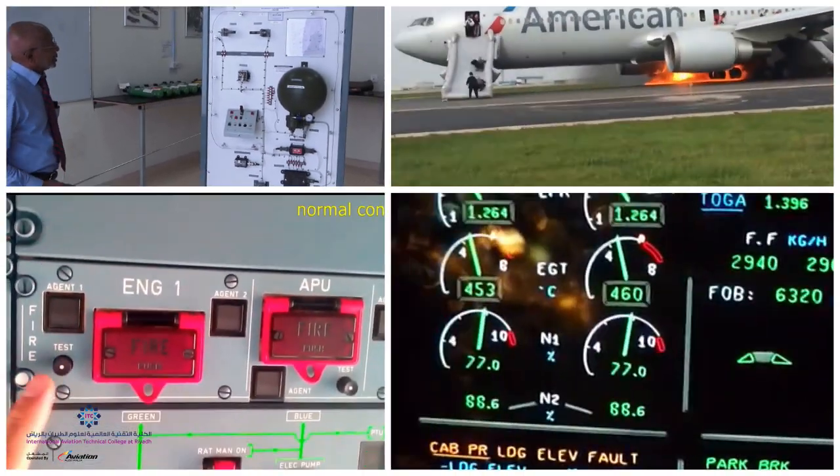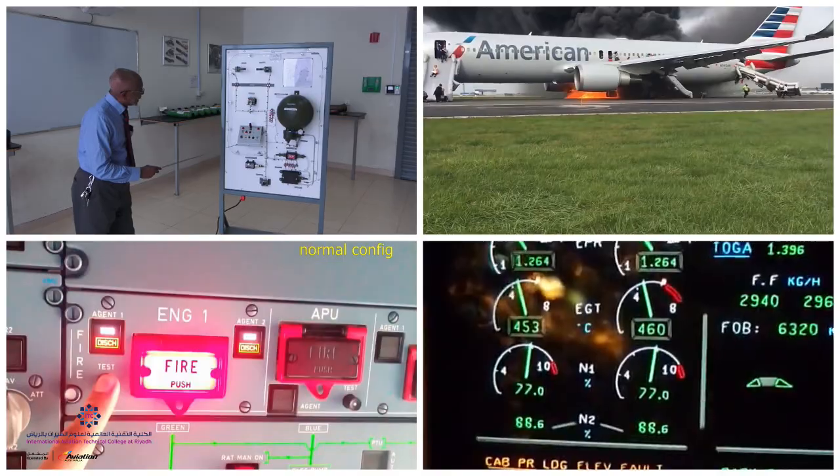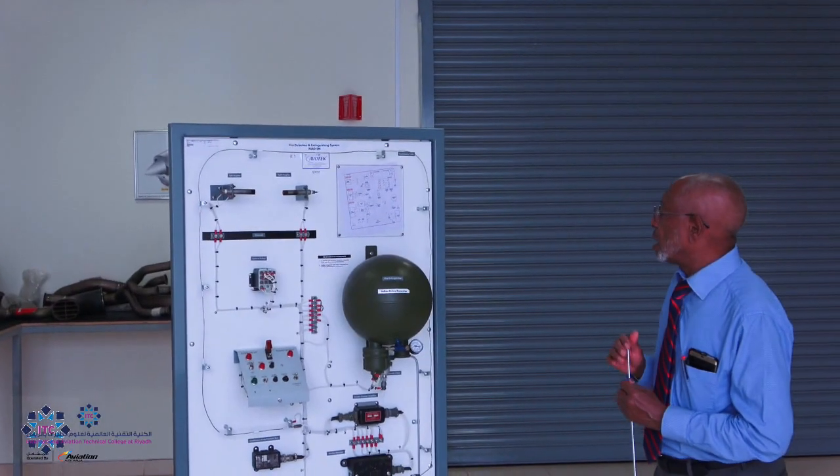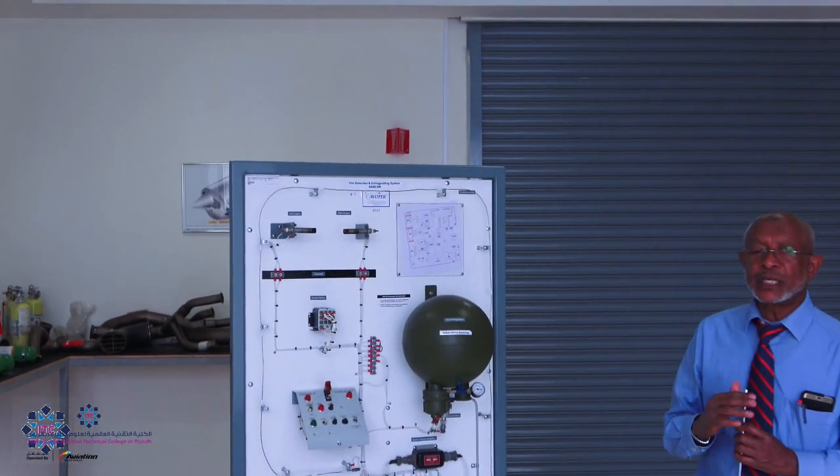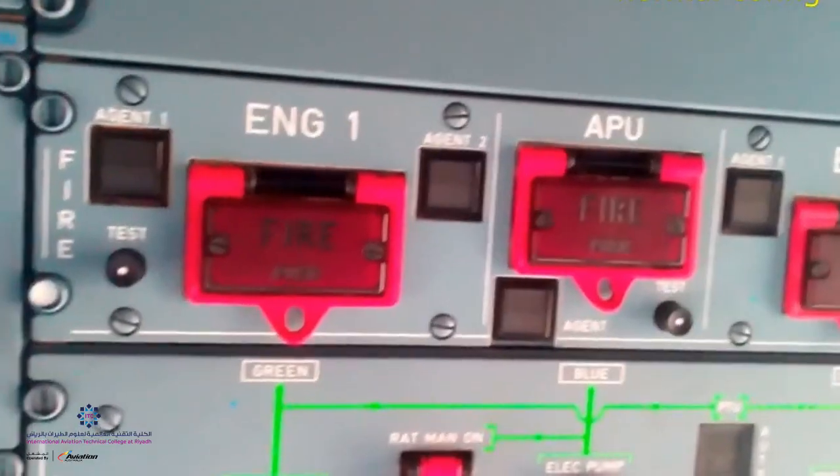In the previous lesson we spoke about the system schematics of the fire protection common to nearly all aircraft. In this lesson we'll be comparing the fire systems model placed in the IATC for training purposes and the systems out there in the real world.